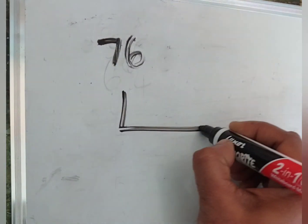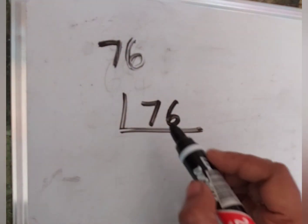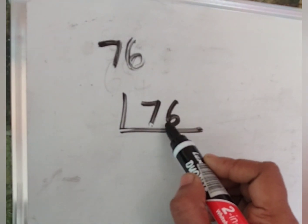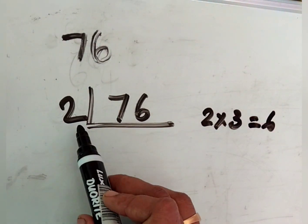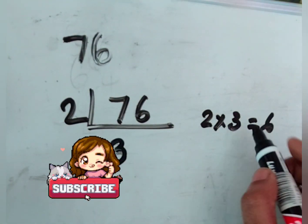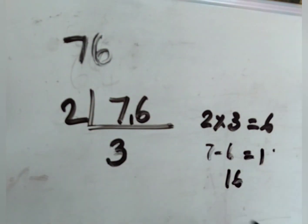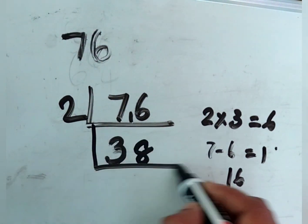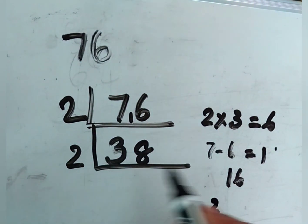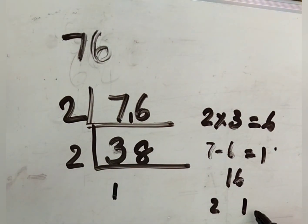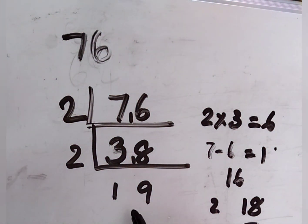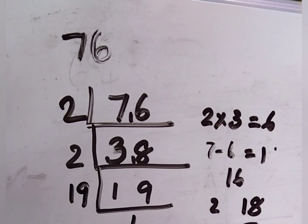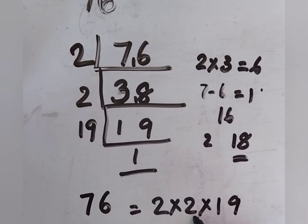Our next question is 76. Since 76 is an even number, I am going to divide this with 2. 2 × 3 = 6, and 2 × 4 = 8, so we take only 2 × 3 = 6. 7 minus 6 is 1; that 1 is kept with the next digit 6, making 16. 2 × 8 = 16. Now, let us divide 38 by 2: 2 × 1 = 2, and the 1 is kept with 8, becoming 18. 2 × 9 = 18. Now, for 19 — since 19 is a prime number, we divide: 19 × 1 = 19. The factors are 2 × 2 × 19.